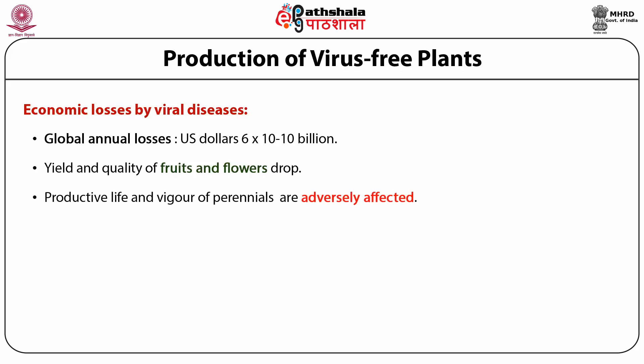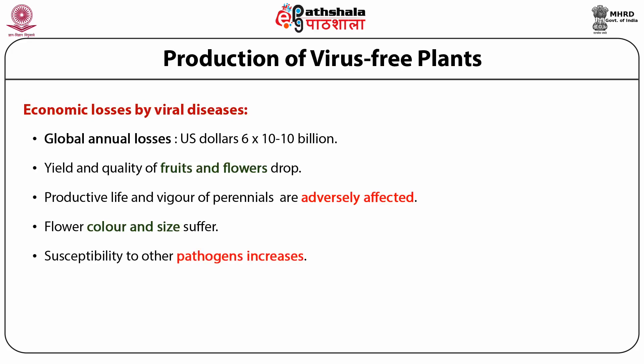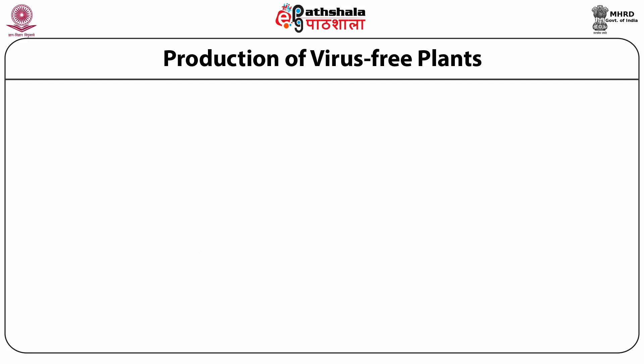Yield and quality of fruits and flowers drops. Productive life and vigor of perennial plants are adversely affected. Flower color and size also suffer. Viral infection also enhances the susceptibility of the plant to other pathogens. In the market, if people know that a crop is affected by virus, the acceptability to consumers also suffers. The presence of virus sometimes also affects the rate of clonal propagation.